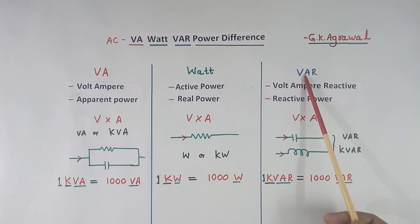All three powers are calculated by multiplying voltage and current. The formula is same, but what is the difference? When current flows in a resistor, the unit becomes watt. When current flows in capacitor or inductor, after multiplication we get volt ampere reactive power.